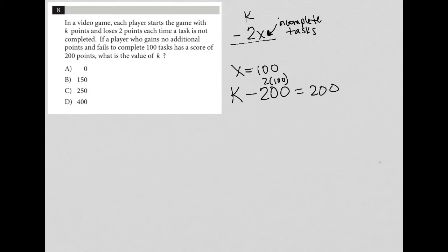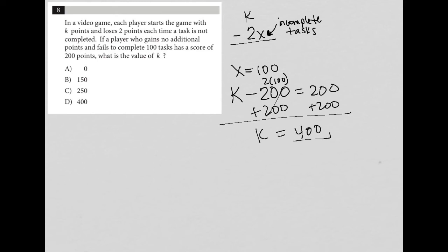What is the value of K? Well, it becomes fairly simple. K is equal to 400. That player must have started off with 400 points in order to make that happen.